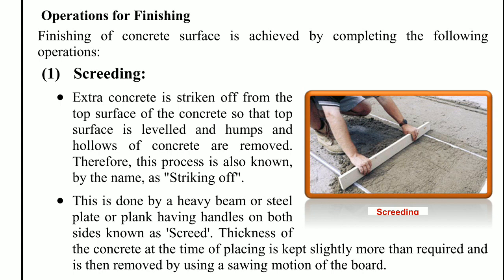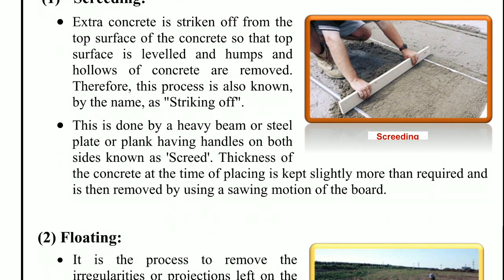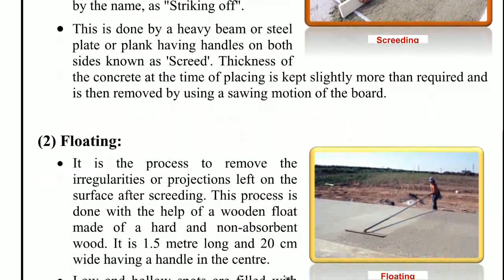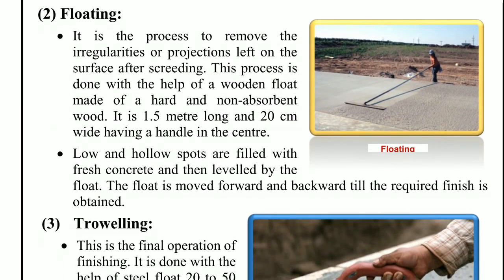The next step is floating. It is the process to remove the irregularities and projections left after screeding. This process is done with the help of a wooden float made of hard and non-absorbent wood, 1.5 meters long and 20 centimeters wide, having a handle at the center. Low and hollow spots are filled with fresh concrete.